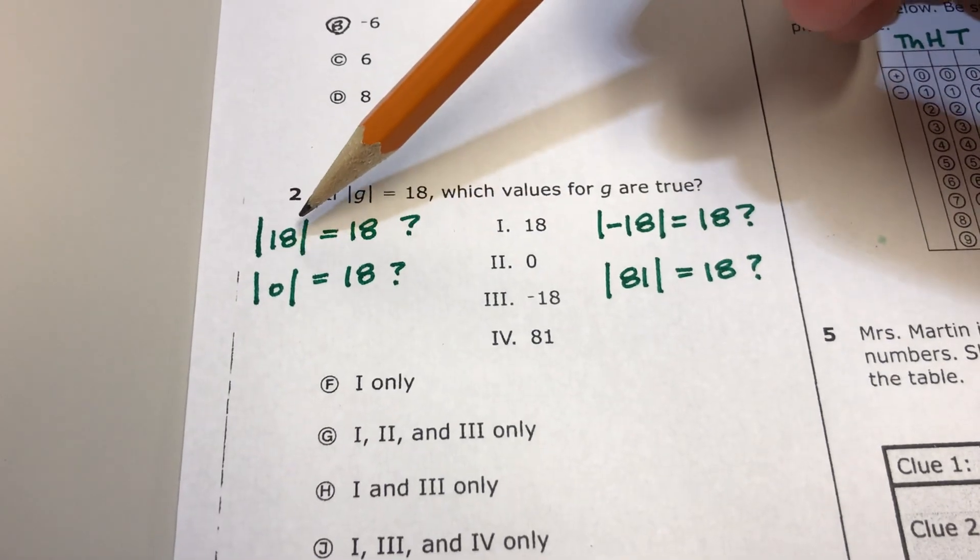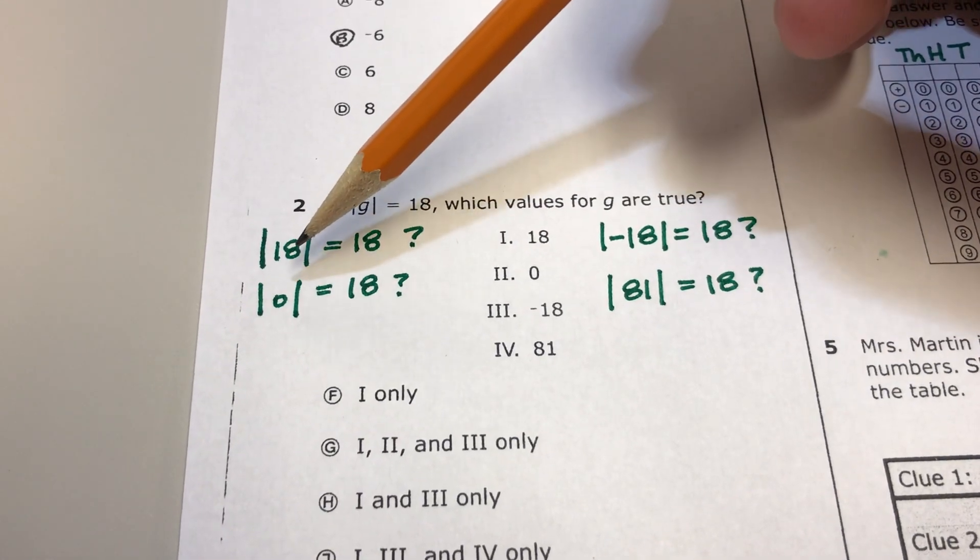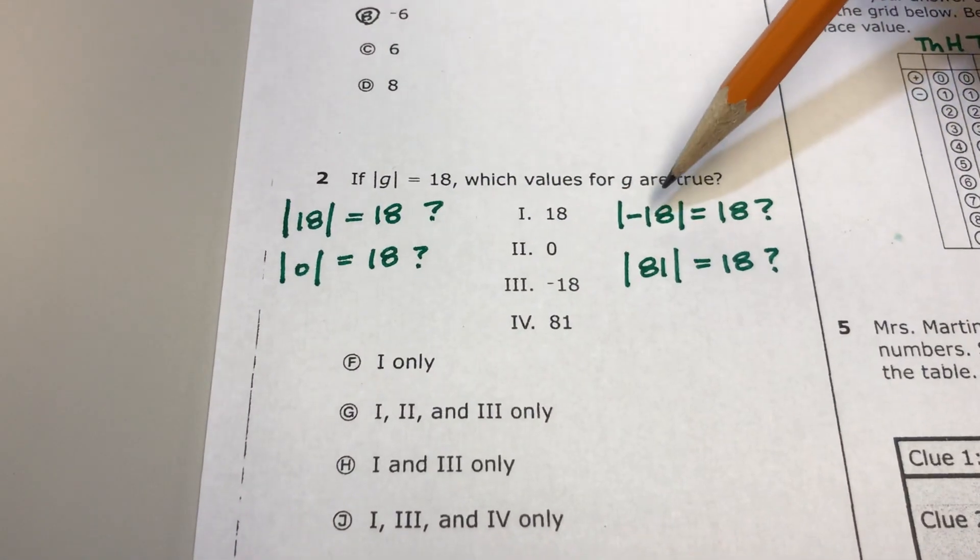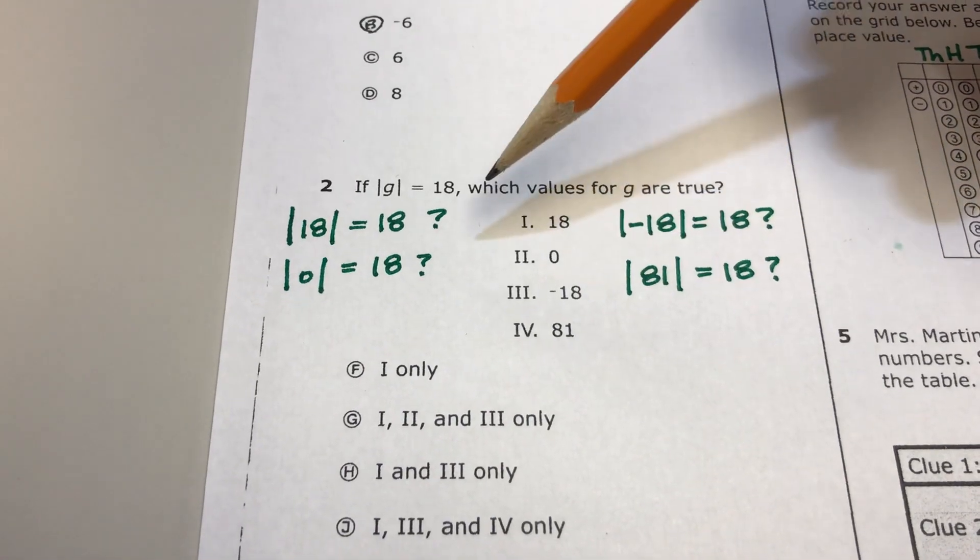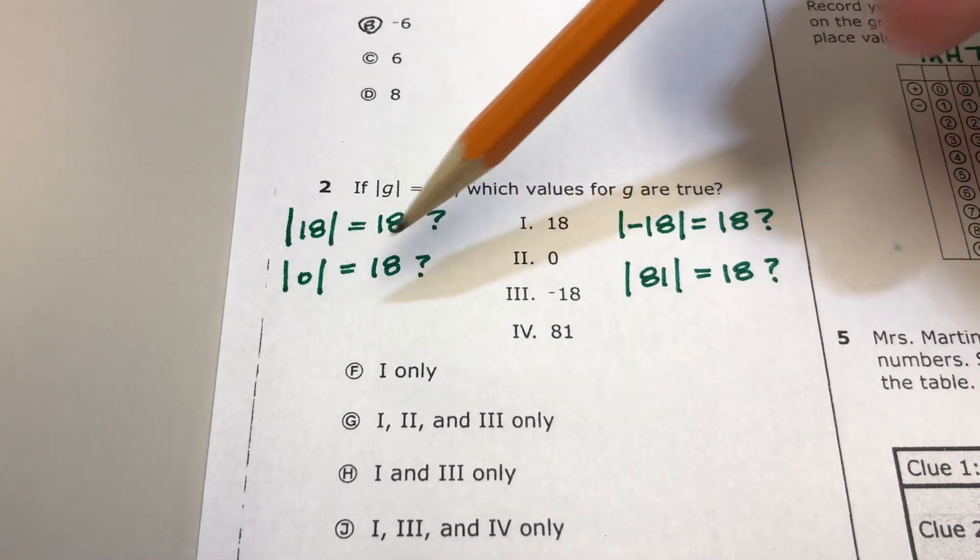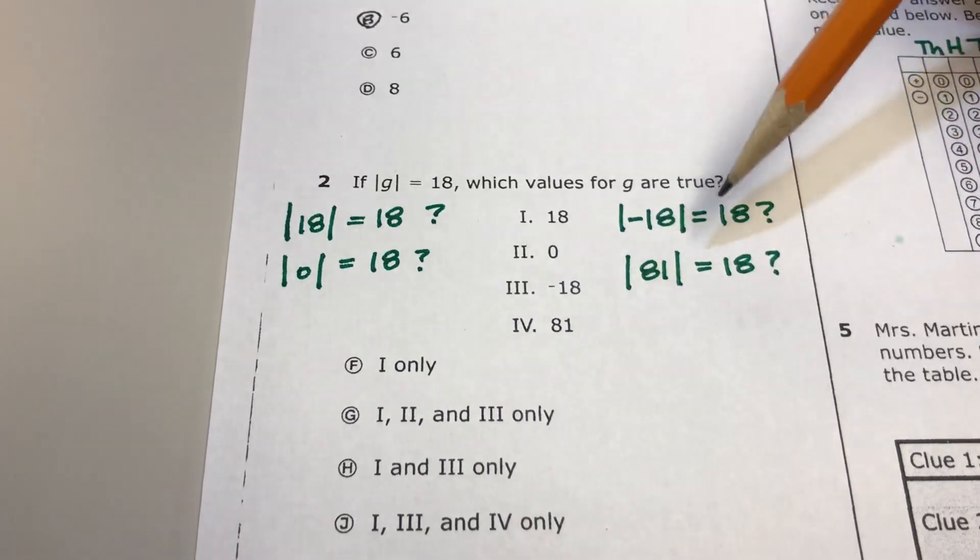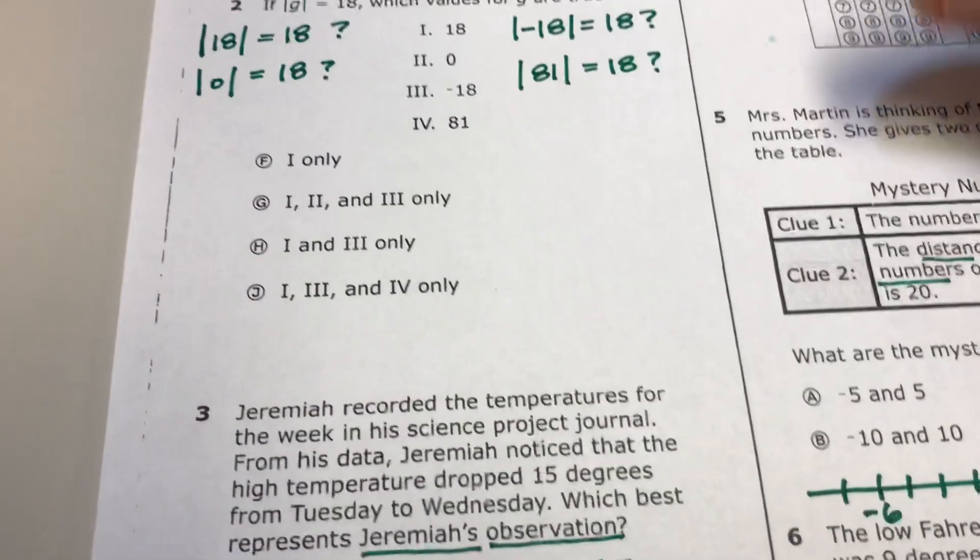So what I did was I plugged in each one instead of G, I did 18, 0, negative 18, and 81, and then I'm looking for which one of these would be true once I have those numbers plugged in. So I hope that helps clear that up.